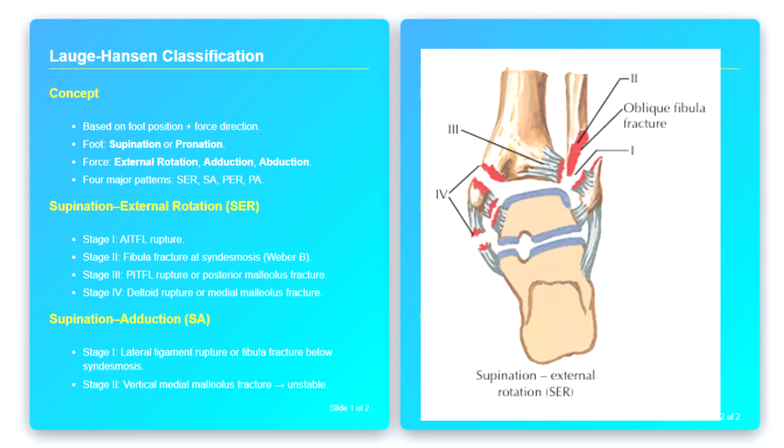In stage three, the posterior inferior tibiofibular ligament is torn, or the posterior malleolus is fractured. And finally, in stage four, the deltoid ligament on the medial side is ruptured, or the medial malleolus is fractured transversely. Thus, the full SER injury involves both malleoli and the syndesmosis, creating an unstable bimaleolar or trimalleolar fracture.